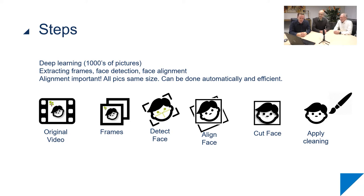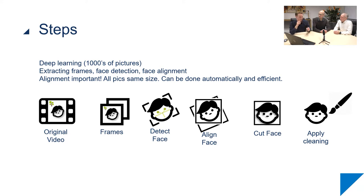After extracting the frames, we try to detect the face. If there are multiple faces in the picture, it can detect multiple faces. Then depending on the tilt or jaw of the face, we align it — alignment is very important. After alignment, we cut the face and apply some cleaning: if there are shadows, we create more even lighting so it's more efficient to merge the two faces. Hans had to do a lot of retakes — this was our third attempt — because lighting is pretty important.